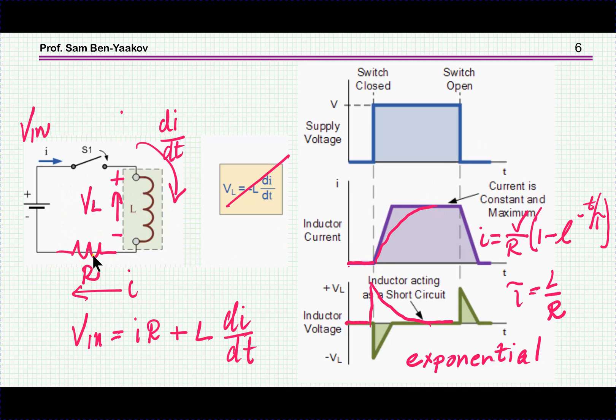Then you have a first-order differential equation which implies that the current will go up exponentially and not like this.